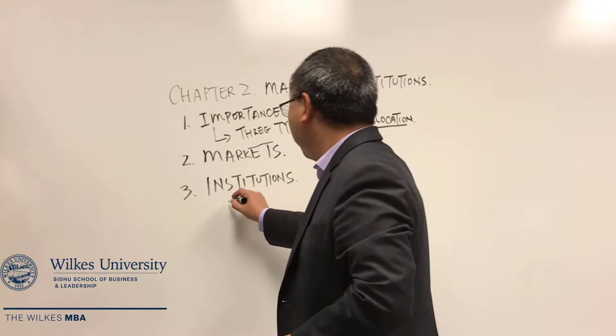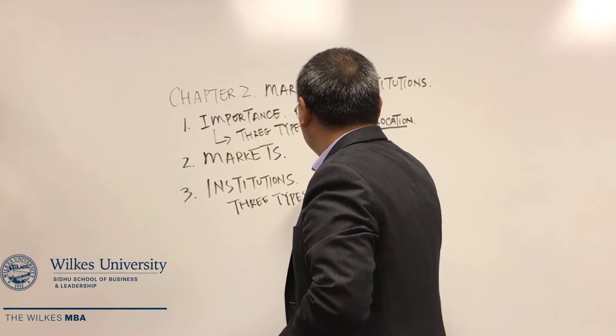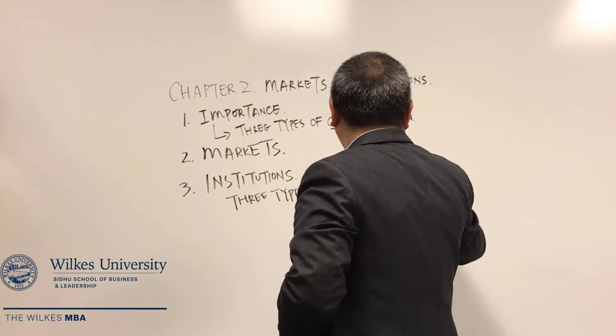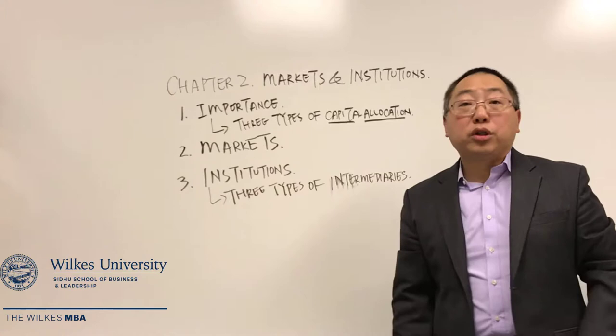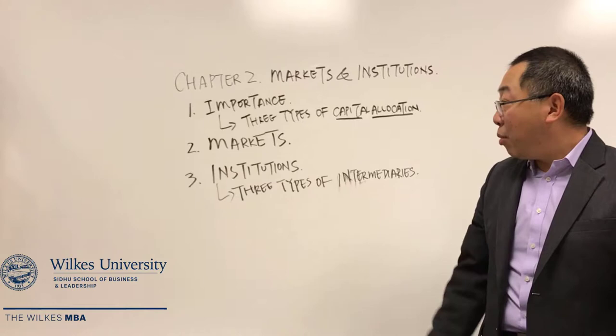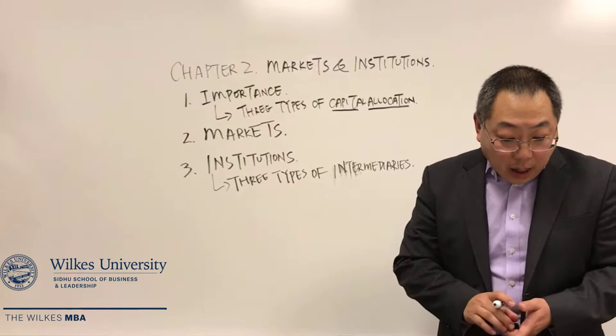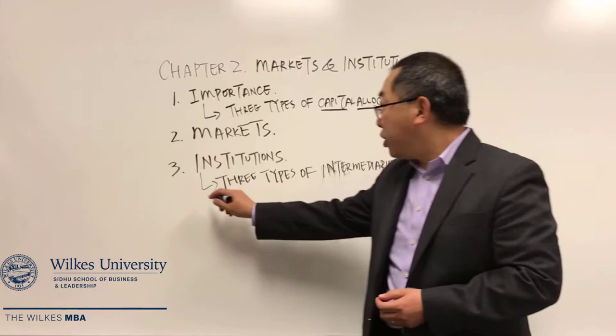There are three different types of financial intermediaries. This is about how the institutions are going to provide services to their clients and customers in the market. They are the depository intermediary, the contractual intermediary, and the investment intermediaries.